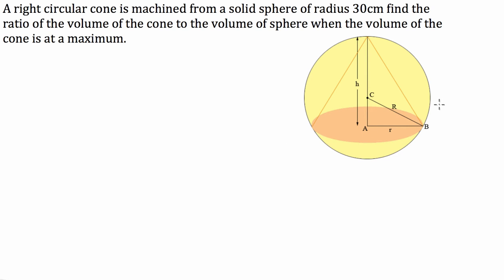So let's write down the data that we know. It tells us that the sphere has a radius of 30 centimetres, so we've got big R that denotes the radius of the sphere, so R equals 30 centimetres.